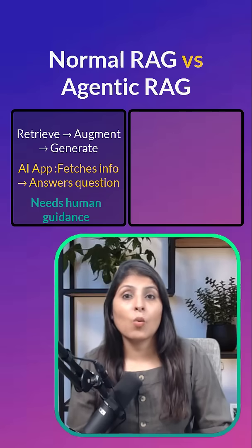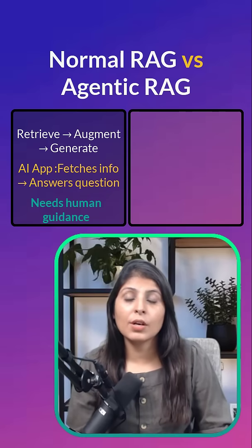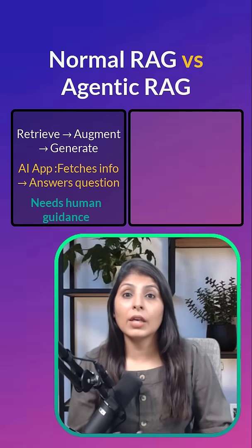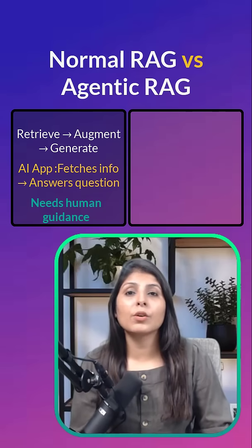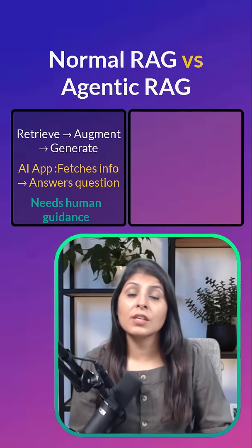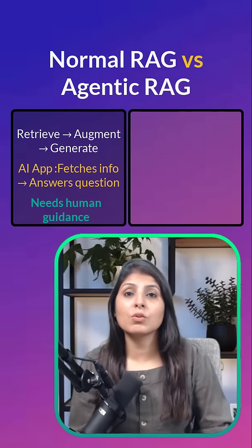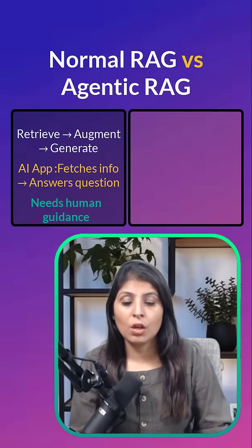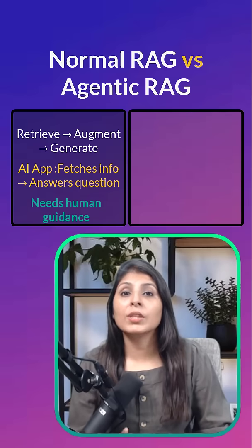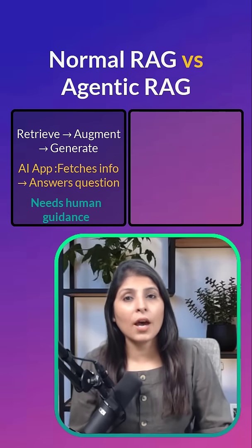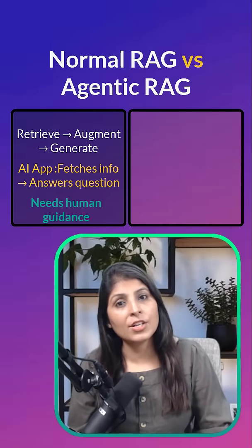For example, a user asks: 'What are the latest AI tools in 2025?' We have to give the AI app a search query or tell it which website or database to check. Then we are the ones giving instructions on how to summarize or present the answer to the user. With RAG, the AI app gives an accurate answer, but we are involved at each step.